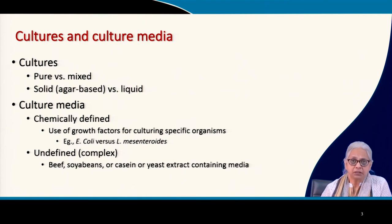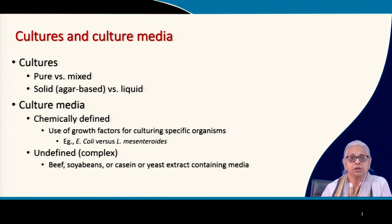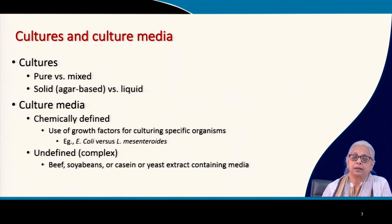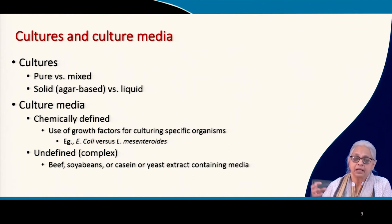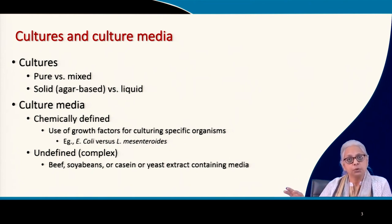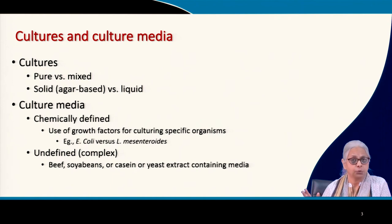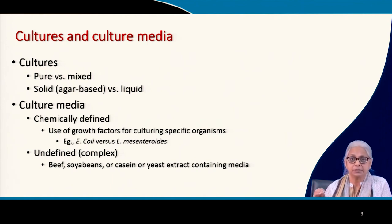When we talk about growing cultures of bacteria in the lab, how can it be done? The first thing is to understand what are the different types of cultures. The first distinction is pure versus mixed. When growing a culture in the lab, it can be a single species — in which case we call it a pure culture. If we take a bacterial consortium, for example a soil sample used to inoculate media, we will have a large number of organisms — not just bacteria but fungi and many others — making it a mixed culture.